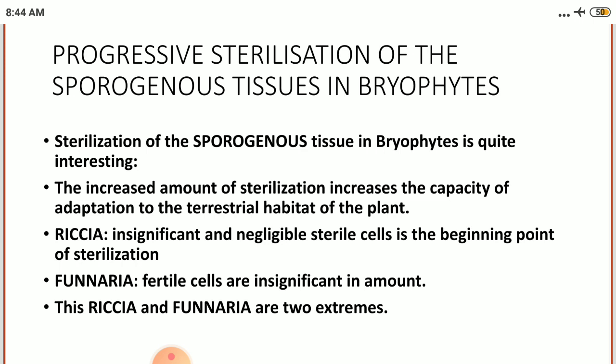Pellia represents a still more elaborated form showing further progress in the sterilization of these sporogenous tissues. The zygote divides transversely into two cells of which the lower cell does not contribute to the embryo. The upper cell divides transversely and gives rise to the lower three-fourths as seta and upper cell to the capsule. Thus the three-fourth part of the tissue is completely sterilized. In the capsule the sterile cells are jacket cells, elators, and elatophore. The elatophore, which is a massive sterile tissue, is found attached at the base of the capsule.